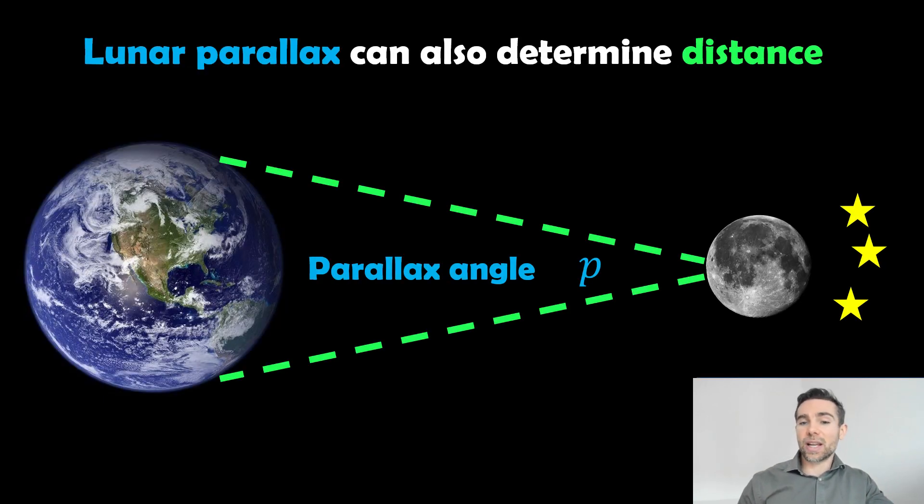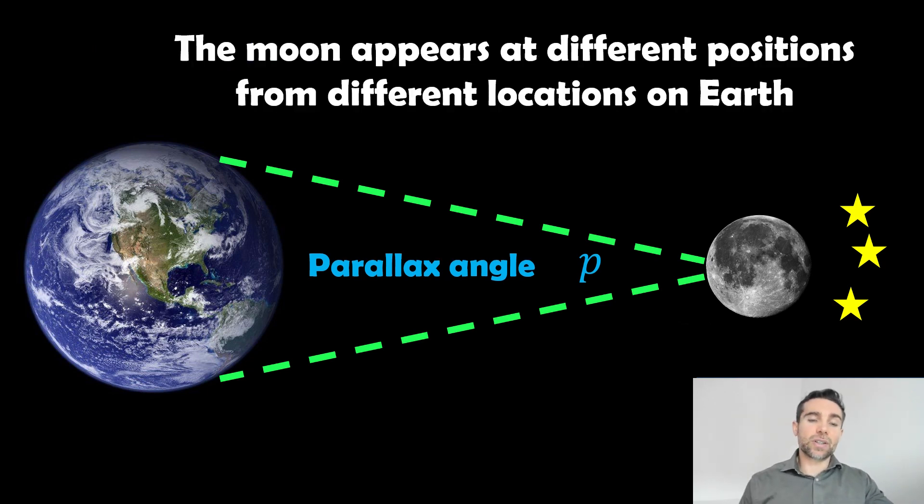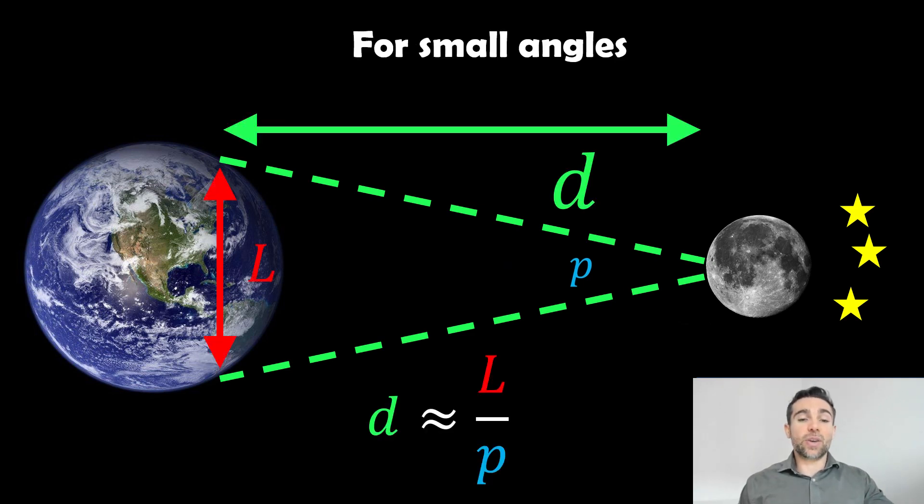The other way that would have been done more historically is using lunar parallax. Parallax is where you look at an object in different locations, and the background stars appear to be in a different location. If we take a measurement or look at the moon from different locations—maybe from the North Pole or South Pole—then the background stars will appear different, despite it being taken at the same time. It basically appears to move against the background stars.